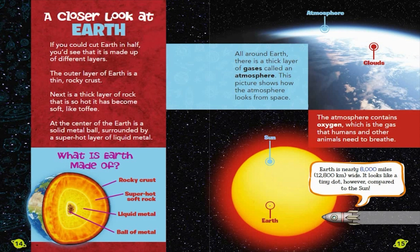Earth is nearly 8,000 miles, 12,800 kilometers wide. It looks like a tiny dot, however, compared to the Sun.